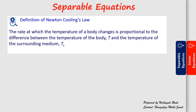So we go to the definition of Newton's Cooling Law. The definition states that the rate at which the temperature of a body changes is proportional to the difference between the temperature of the body — denoted as T — and the temperature of the surrounding media, which is given by Ts. Based on this definition, how can we generate Newton's Cooling Law differential equation?